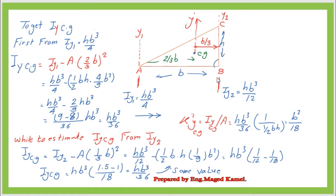Now we want to check that the calculations of the moment of inertia for both Y1 and Y2 are correct — they should give us the same value of the moment of inertia at the CG in the Y direction. Starting from Y1: IY1 = HB³ divided by 4. To get the moment of inertia for the vertical axis passing through the CG, we subtract the area multiplied by the square of the horizontal distance x-bar. So IY_CG calculated from IY1 equals HB³/4 minus one-half B H (the area) multiplied by